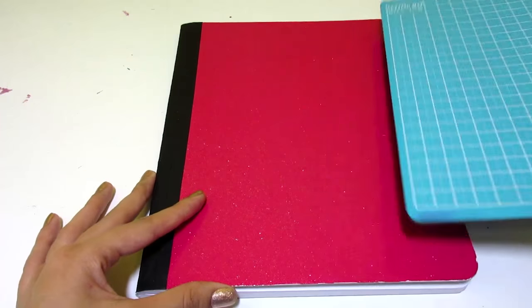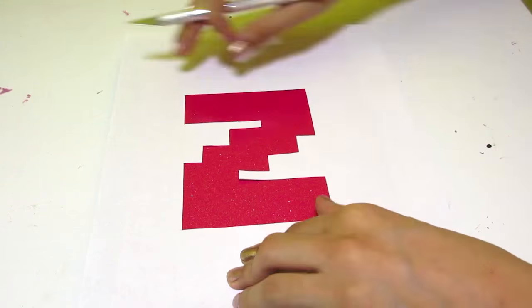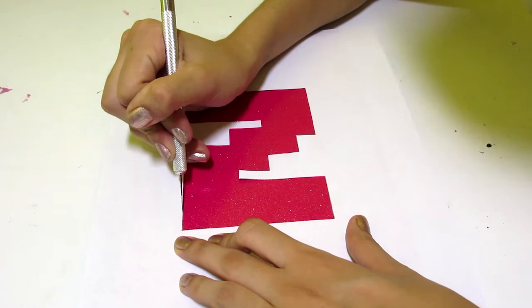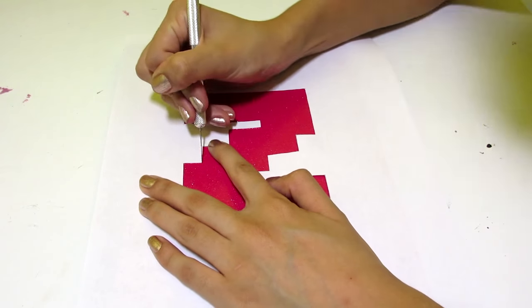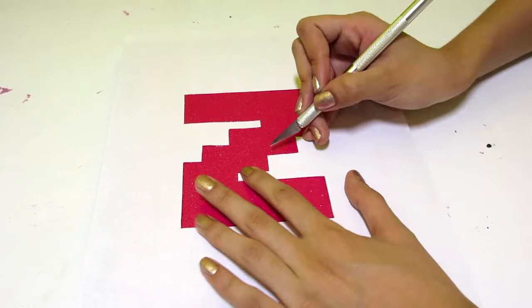Next, you want to grab your notebook and place the cutting mat inside of the front page. Now place your stencil at the center of the notebook, grab your X-Acto knife and very carefully begin marking out your letter. Make sure you're very careful with this and that you take your time and ask an adult for help.